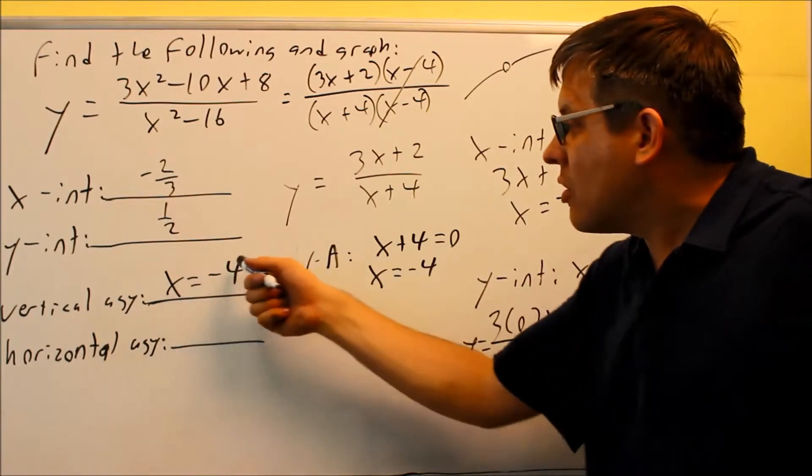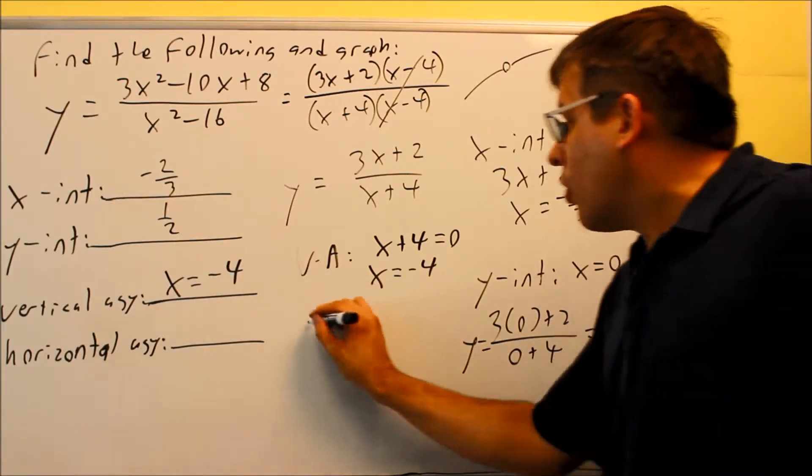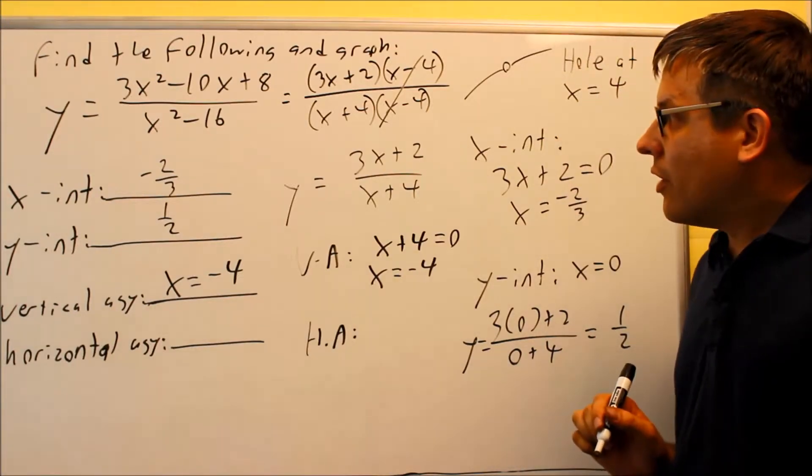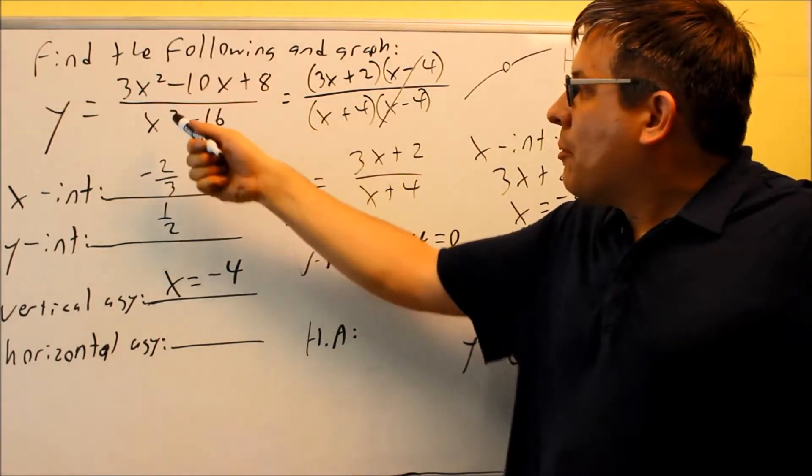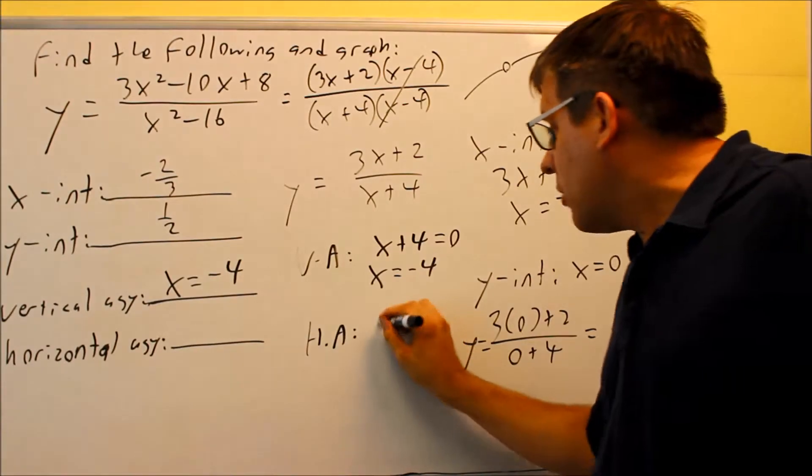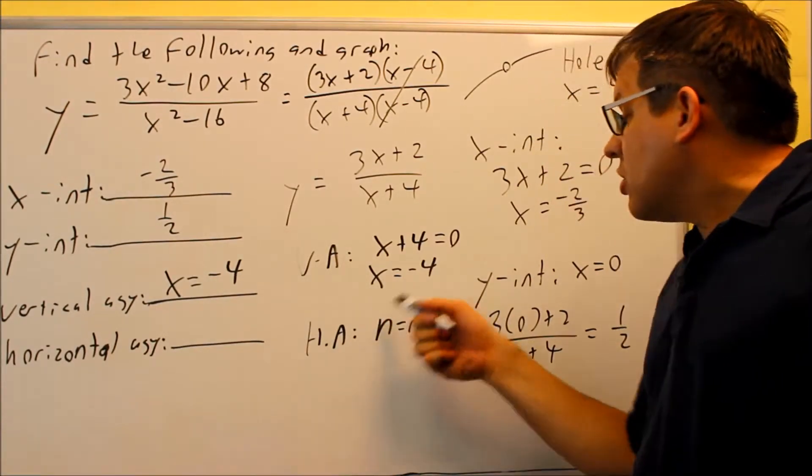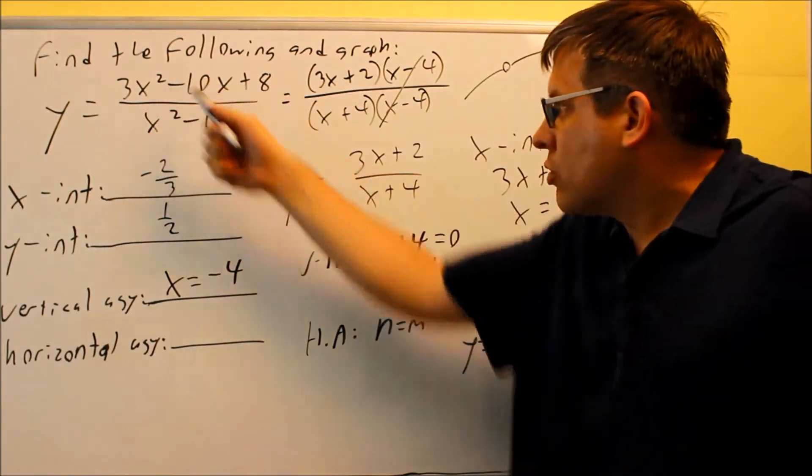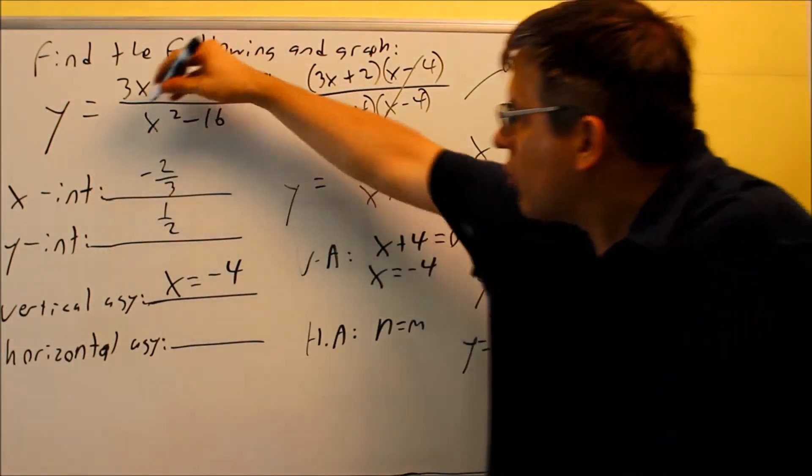For your horizontal asymptote, you're going to look at the different rules that we have going on there. The highest power on top is the same as the highest power on the bottom, that would be the situation where n equals m. Highest power on top is n, highest power on the bottom is m, they're equal to each other.